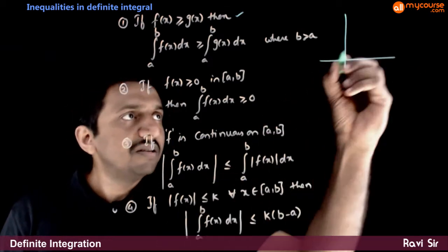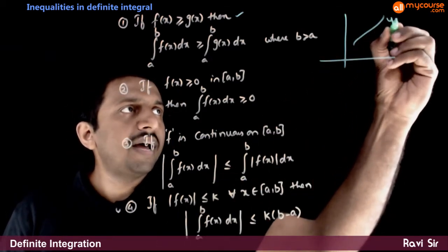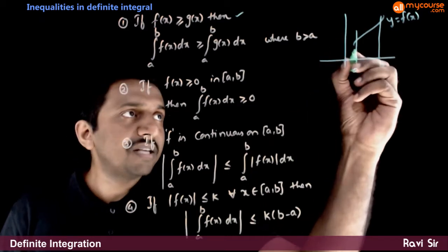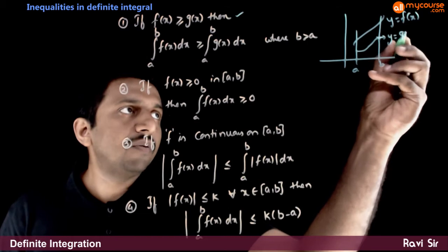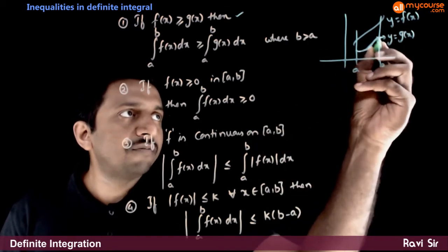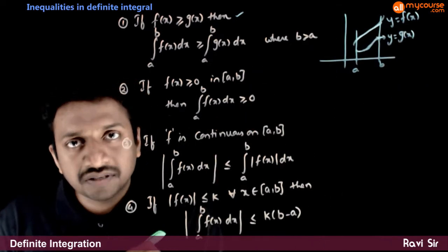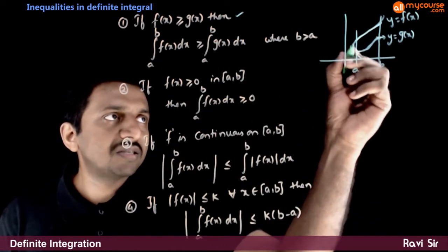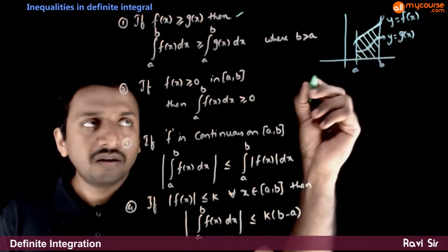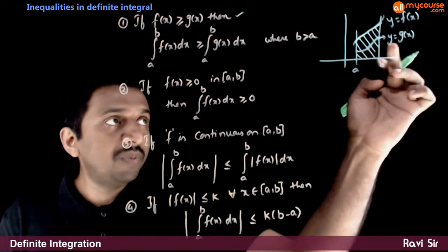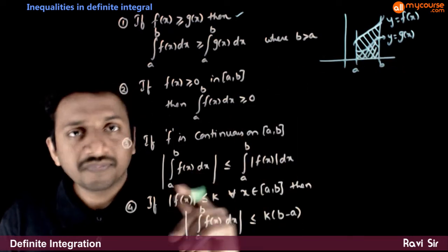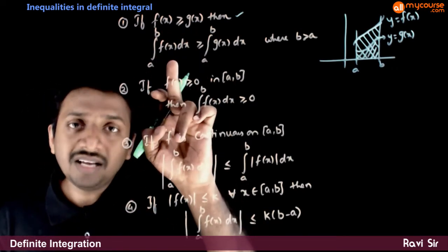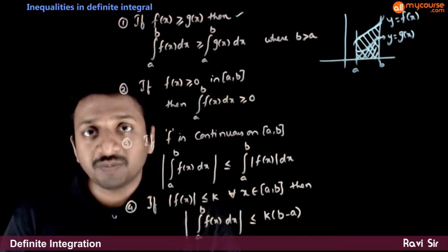We have a graph something like this. Between a and b, if the function f(x) is always greater than the function y = g(x), let this be the graph of y = g(x) and let this be the graph of y = f(x), with f(x) always above g(x). The integration from a to b of f(x) — this whole area — will always be greater than the integration from a to b of g(x), which is the smaller area. So if f(x) is always greater than or equal to g(x), the integral of f(x) will always be greater than the integral of g(x) between a and b.